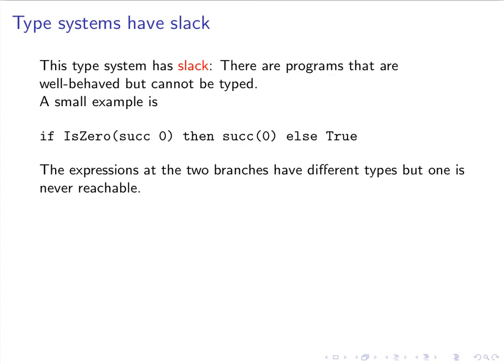So this was the simple version of our type system. This type system, and in fact the ones that follow, all have one thing in common: they have slack, meaning there are programs that are well-behaved but cannot be typed. Here's a tiny example: if isZero(succ 0) then succ(0) else True. The expressions at the two branches of the if expression have different types, but one of them is never reachable because this condition, isZero of 1, is false. So no matter what we do, we always end up returning true.